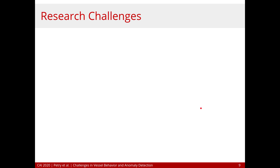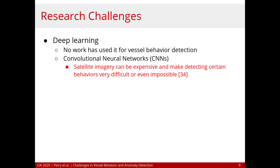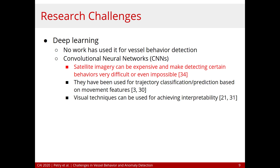Another area of research that remains unexplored for behavior detection is deep learning — no work has used it. Undeniably, computer vision is the field that has experienced the most advances in deep learning, and when we talk about deep learning with computer vision, we think of CNNs. Although we have satellite imagery for vessel behavior detection, it can be very expensive and can make detecting certain behaviors very difficult. However, other works have used CNNs for trajectory classification based on movement features, which are also available in AIS data — essentially trajectory data — suggesting CNNs could be a good direction for vessel behavior detection and interpretability.